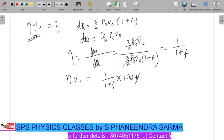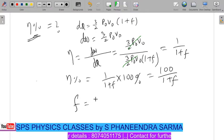So by multiplying with hundred we get the percentage, that means we can write 100/(1+f). What is the meaning of f here? Where f is equal to degrees of freedom.